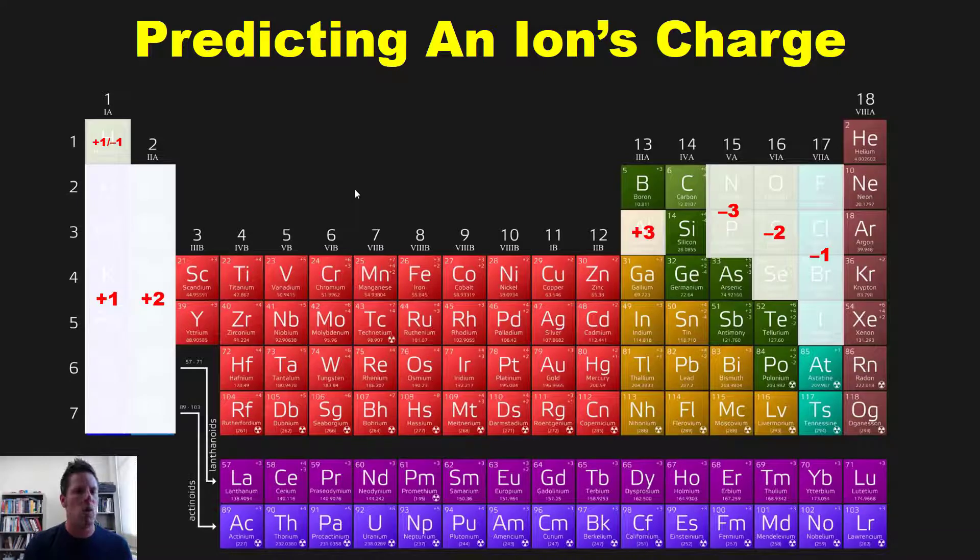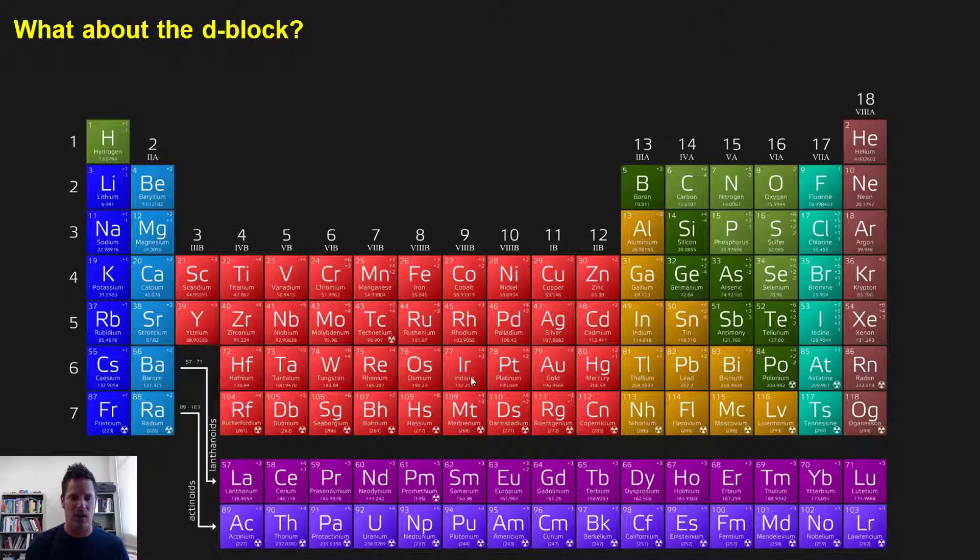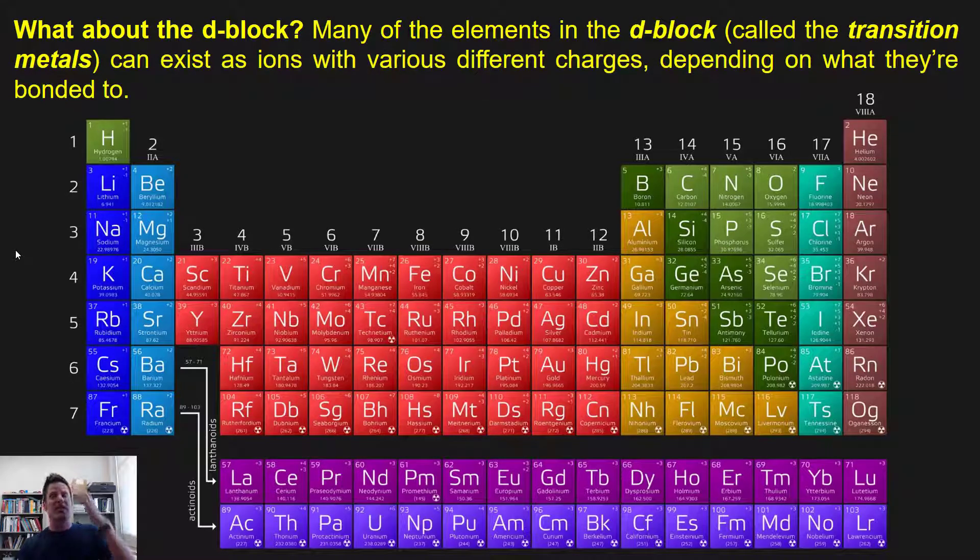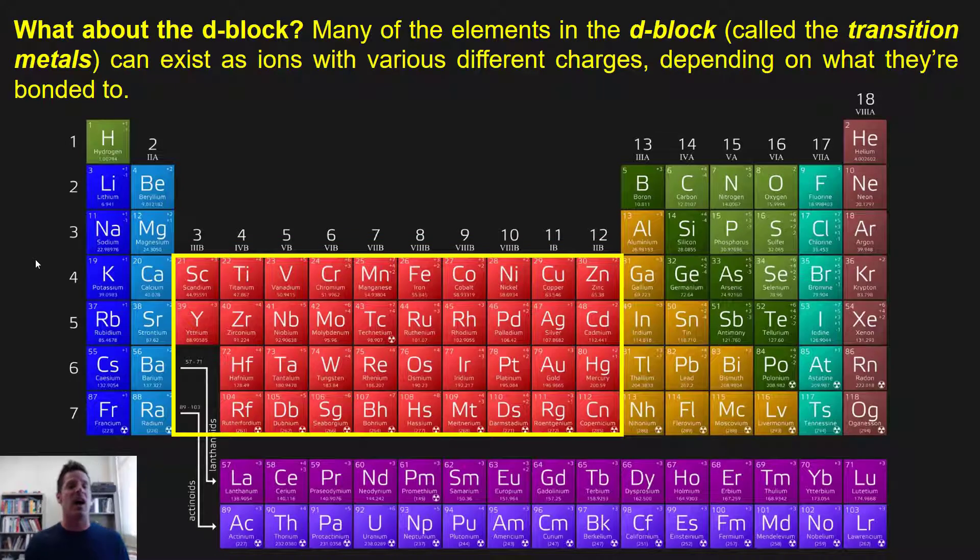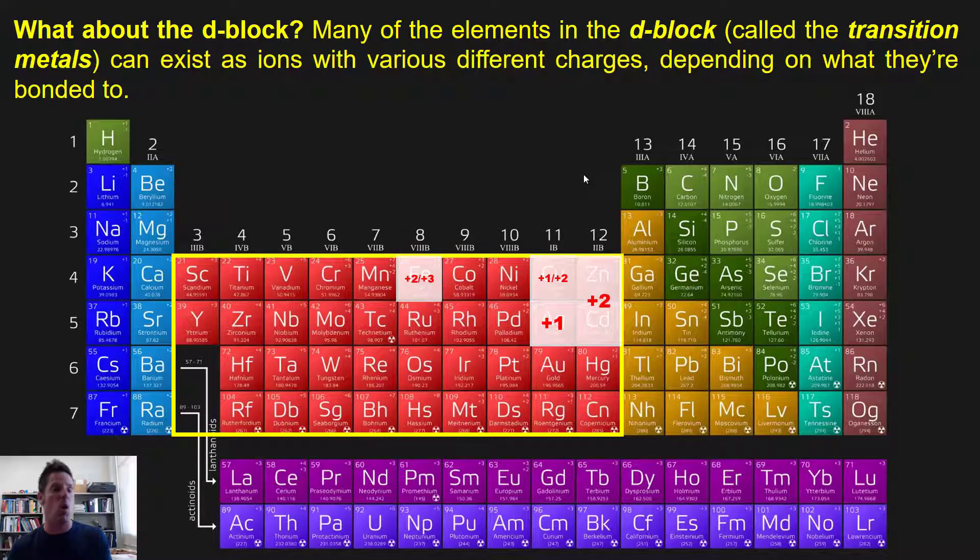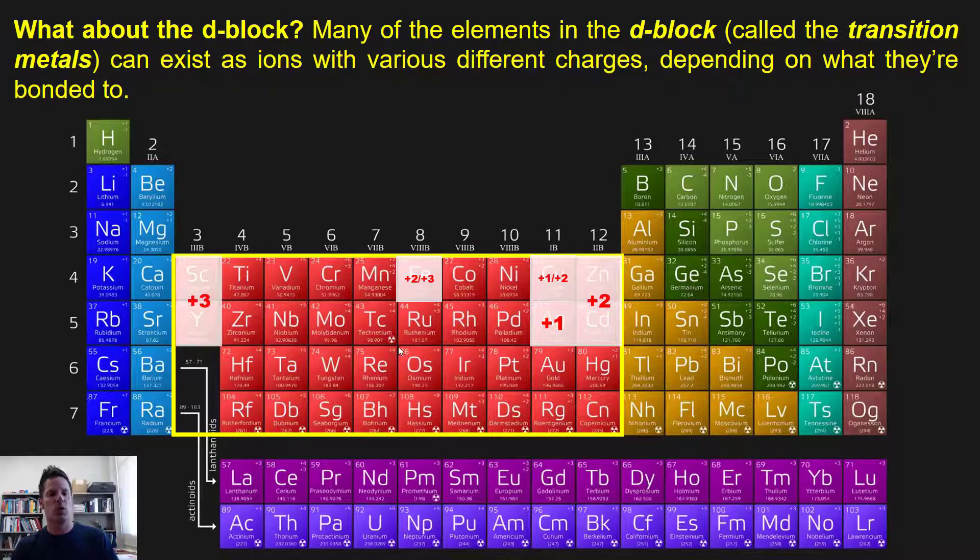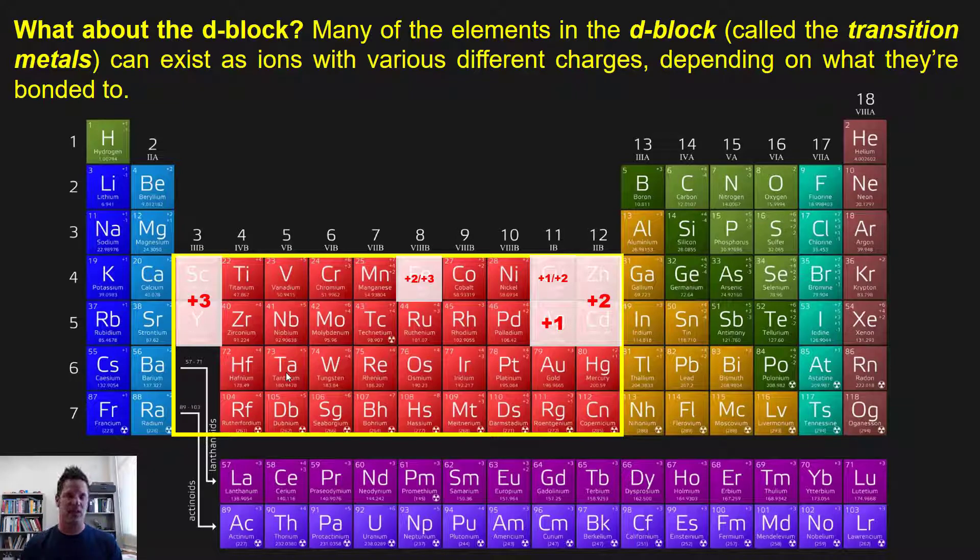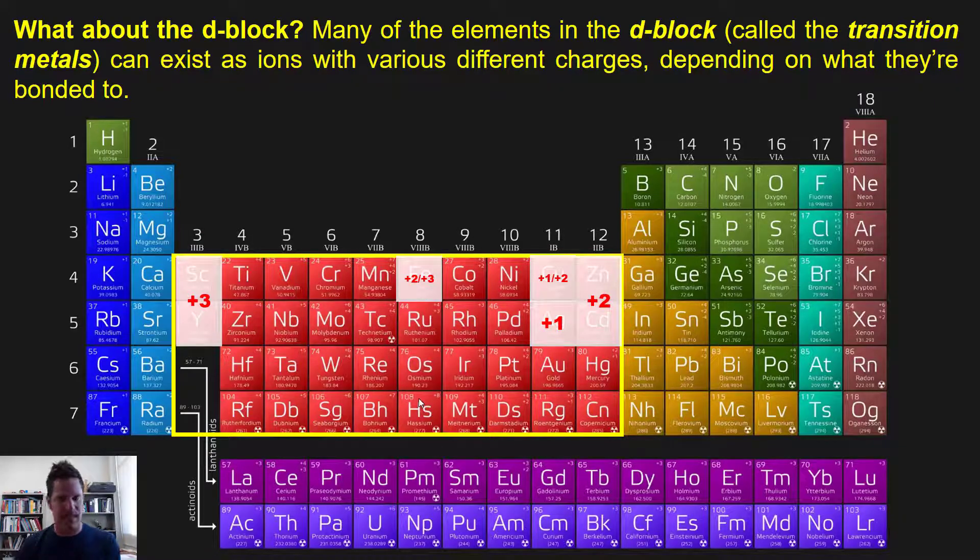Now with that said, you might ask this question: what about the D block that we keep ignoring? These elements that are colorized red here. What charges do they want to have? Well, as it turns out, many of the elements in the D block, which are called the transition metals, can exist as ions with various different charges, depending on what they're bonded to. For example, zinc and cadmium like to exist most stably as having a plus 2 charge, silver likes to have a plus 1 charge, and copper can have either a plus 1 or plus 2 charge, depending on what it's attached to. Iron similarly can exist as a plus 2 or plus 3, again depending on what it's bonded to. And scandium and yttrium both generally like to attain a state or charge of plus 3. The remaining elements in the D block can have charges all over the place, and that also remains true for most of the elements down here in the F block that I'm choosing to ignore for now, but will address later on. Now again, this variability in the D block elements' charges will come into play and be important in just a few moments.